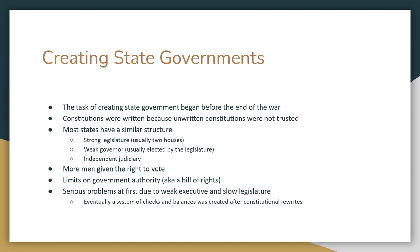There would be an independent judiciary. If you remember, there were issues with the king being able to make laws himself and appoint judges himself. So they wanted to make the court system independent. And then they wanted to give more people the right to vote — they wanted to enfranchise more people.